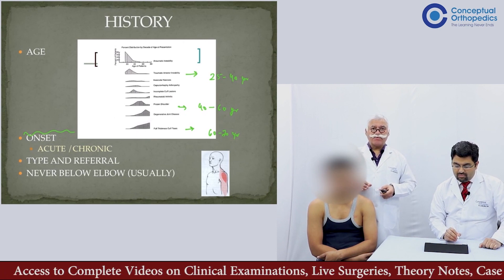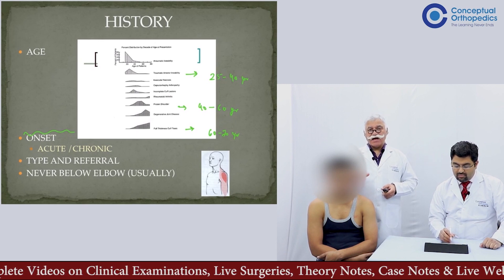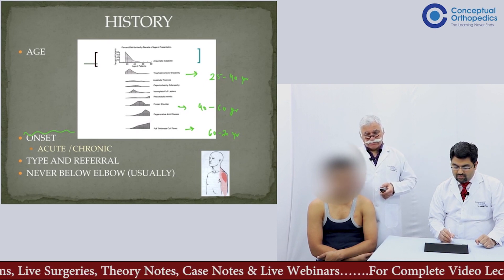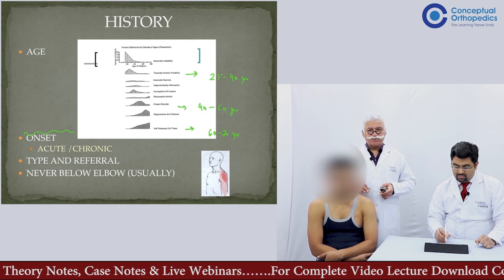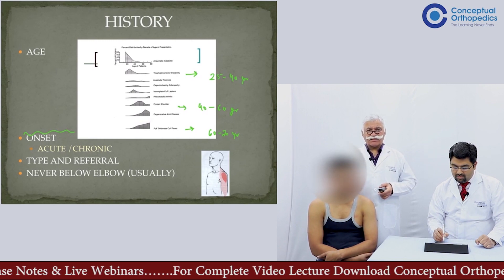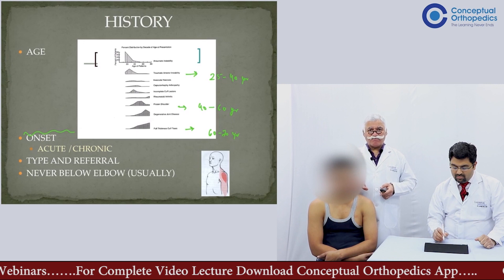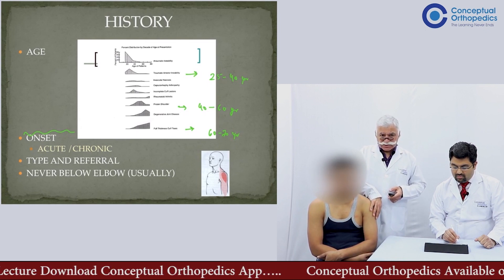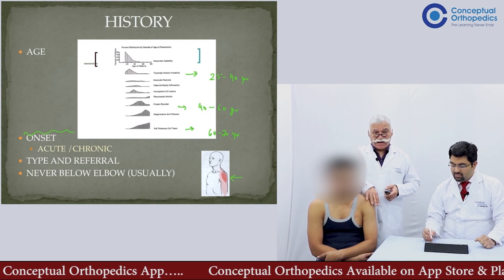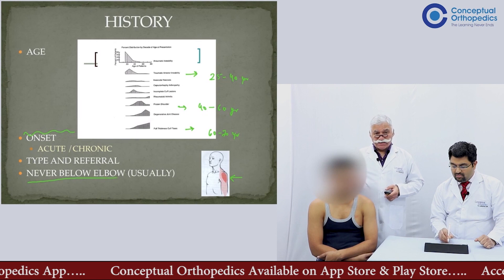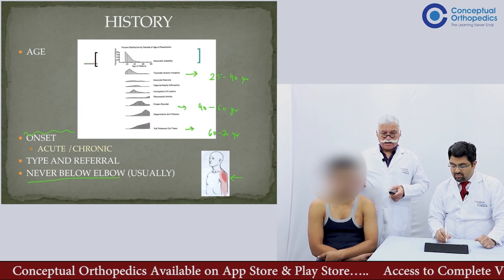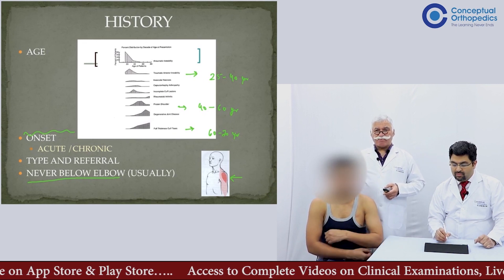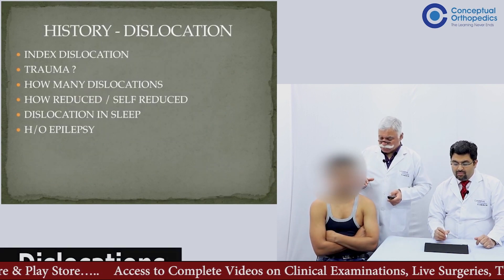Another factor when looking at history is whether the onset was acute, which occurs in traumatic episodes, calcific tendinitis, or septic pathologies. Other problems which are chronic — such as degenerative cuff problems or adhesive capsulitis — have a chronic onset. Regarding pain type and referral, most shoulder pains are around the shoulder area, referring commonly to the insertion of the deltoid. Most pains are limited above the elbow. Any pain going below the elbow usually has a pathology starting in the neck rather than the shoulder.